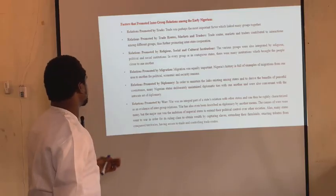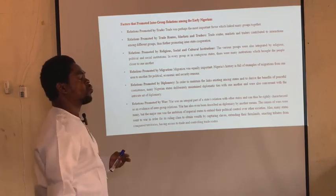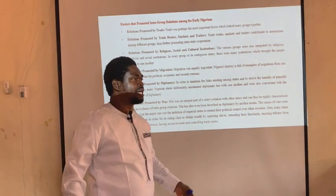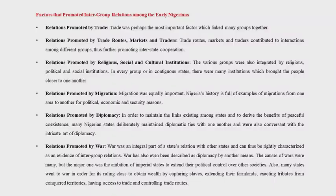Examples of relations promoted by diplomacy include the relationships that existed between empires like the Benin Empire, the Oyo Empire, and the Kanem-Borno Empire, because these Nigerian empires maintained diplomatic relations among themselves. Lastly, we see relations promoted by war. War was an integral part of state relations with other states and can thus be rightly characterized as evidence of intergroup relations. War has also been described as diplomacy by another means.